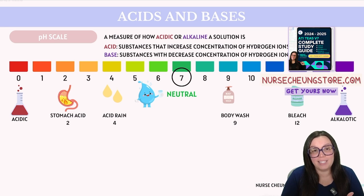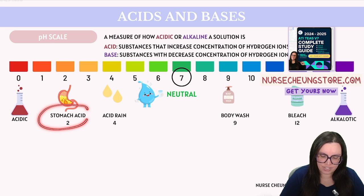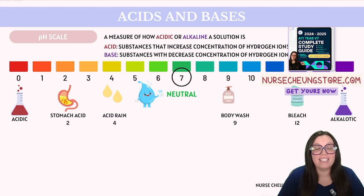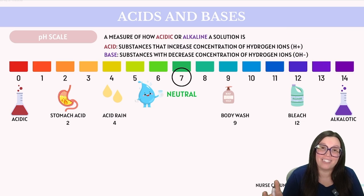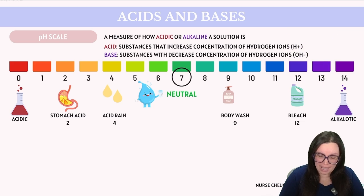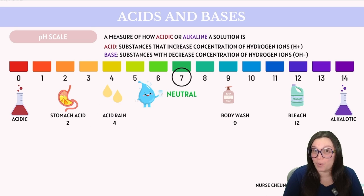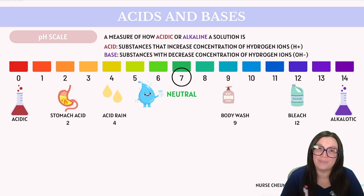To put this into perspective, let's consider the acid that we find in our stomach, which has a pH of around 2. This acidity helps kill bacteria and aid in digestion. On the other hand, we have acid rain, which typically has a pH of 4, indicating that it's less acidic than stomach acid, but it's still harmful to our environment.